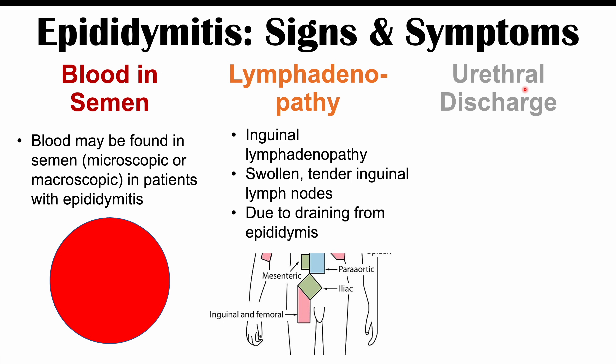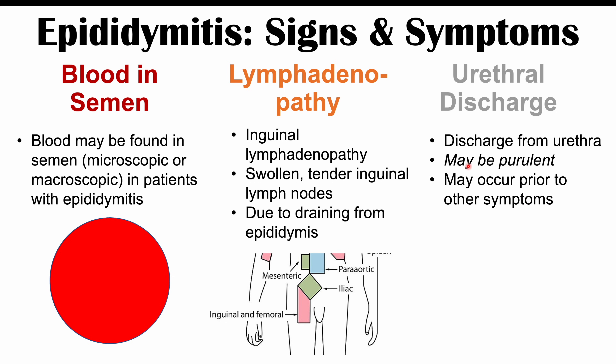We can also see urethral discharge, which is a discharge from the urethra that may or may not be purulent — meaning pus-like in appearance. Notably, this urethral discharge may actually occur prior to other symptoms, such as scrotal pain. If you want to learn more about epididymitis, please check out the full lesson on this topic. Thank you so much for watching.